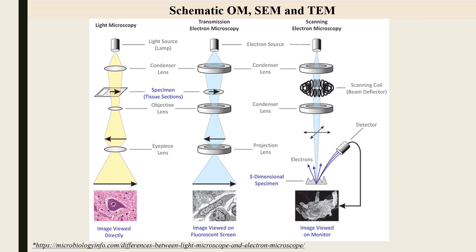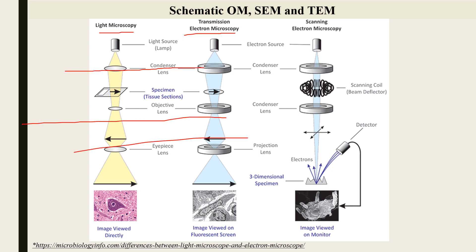When we compare light microscopy, transmission electron microscopy, and scanning electron microscopy, these three microscopes share a similar structure: a condenser lens system, objective lens system, and projector lens system. The condenser lens system takes the source radiation — either light or electron — and makes it converge to fall into the sample.